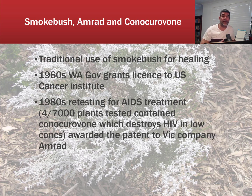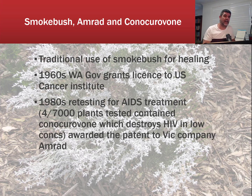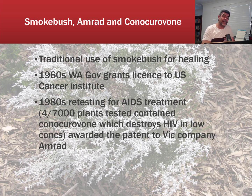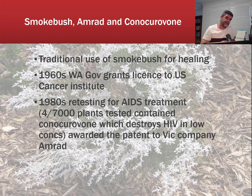The findings were inconclusive, but the plant was kept in storage. Then in the 1980s, there was an outbreak of AIDS. We subsequently found that AIDS is caused by the human immunodeficiency virus, or HIV. A lot of testing happened around that because we didn't have any treatments for AIDS patients. Seven thousand plants from around the world were tested, and only four of those plants were found to contain the very important chemical ingredient Conocurovone — the specific chemical that destroys HIV in low concentrations.